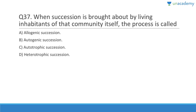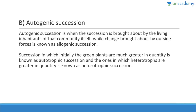Question thirty-seven: When succession is brought about by the living inhabitants of that community itself, the process is called autogenic succession. Auto means self, genic means generated. Autogenic succession is driven by the living inhabitants themselves. Change brought about by outside forces is called allogenic succession. Succession in which green plants are initially much greater in quantity is called autotrophic succession, and the one in which heterotrophs dominate is called heterotrophic succession.